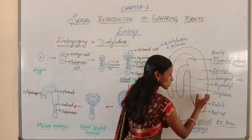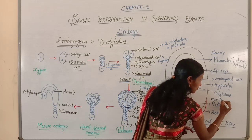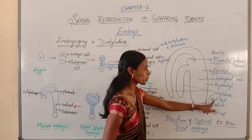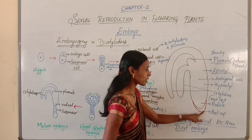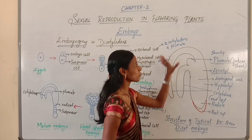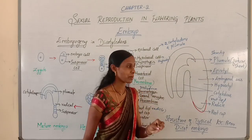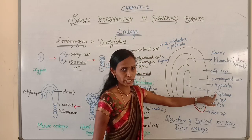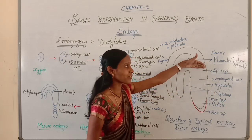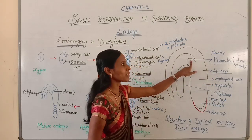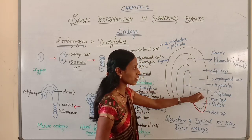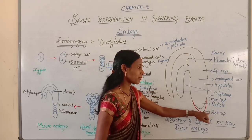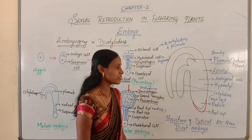The hypocotyl ends with the root tip called the radicle, and this root tip is covered with the root cap. So the typical dicot embryo consists of two parts — the embryonal axis and two cotyledons. The region above the cotyledons is epicotyl ending in plumule; the region below is hypocotyl terminating at the radicle covered by root cap.